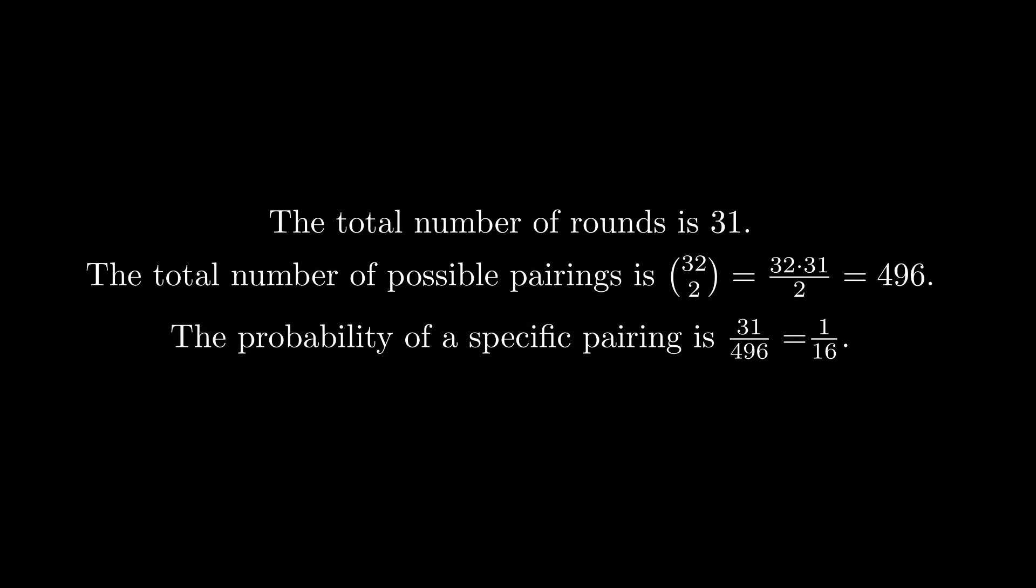Since there are 32 players, the total number of possible pairings is 32C2, which equals 496. Each of these pairings are equally likely to occur in the tournament. Since there are 31 rounds, we will have 31 different pairings throughout the tournament. So the probability of a specific pairing is 31 by 496, or 1 by 16. Hence, the probability that Alice and Bob face each other during the tournament is 1 by 16.